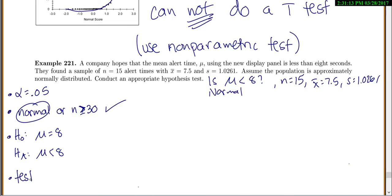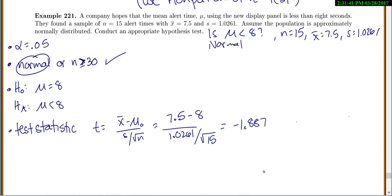Then you need to find your test statistic. So t is equal to x bar minus my hypothesized mean over s over the square root of n. So in our case we have 7.5 minus our hypothesized mean and the null hypothesis is 8. s is 1.0261 and n is 15. So this gives me negative 1.887. For a t-test you also need degrees of freedom. Degrees of freedom is n minus 1. So 15 minus 1 equals 14.